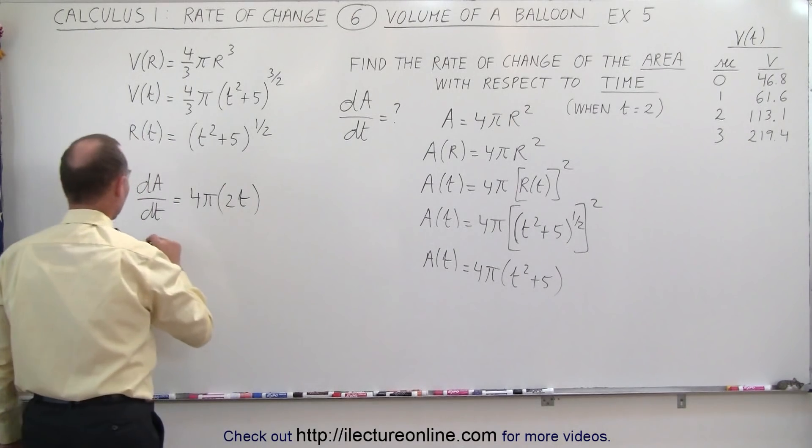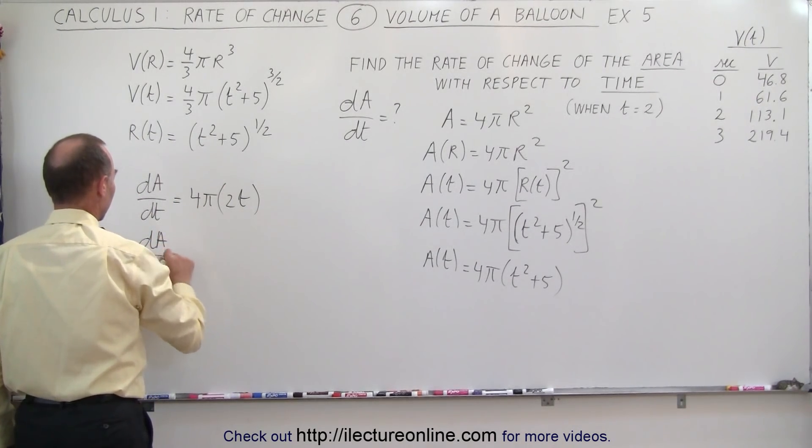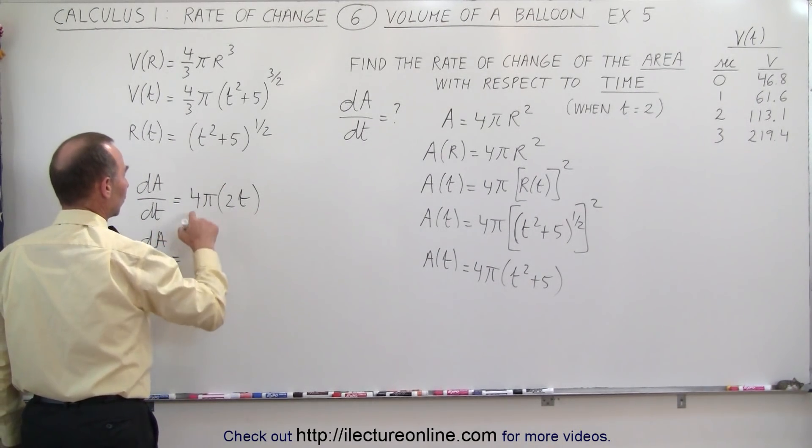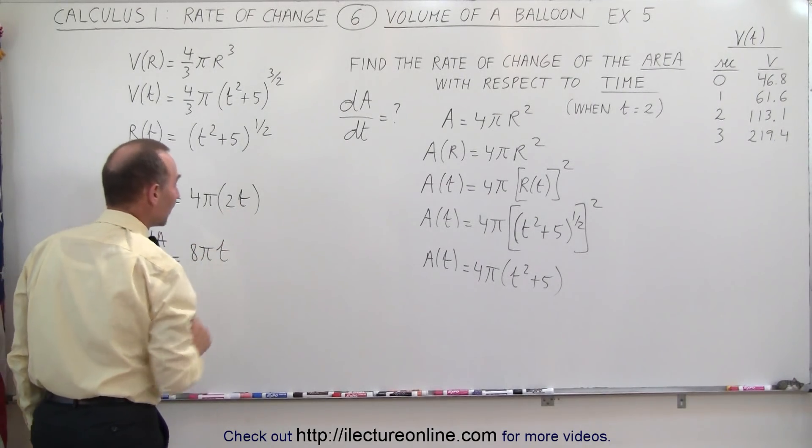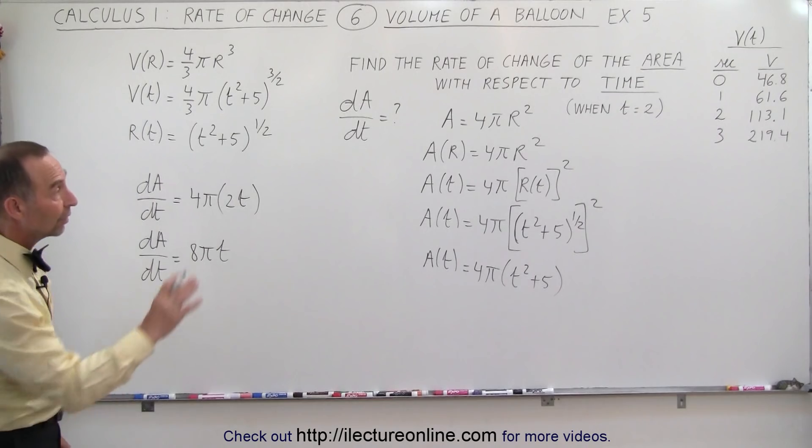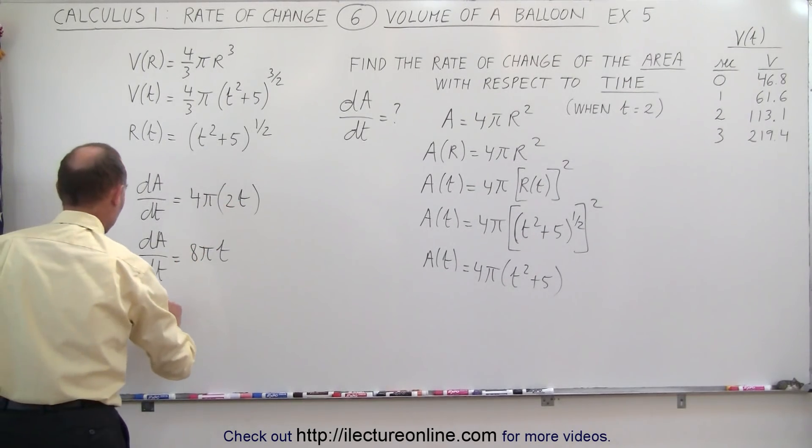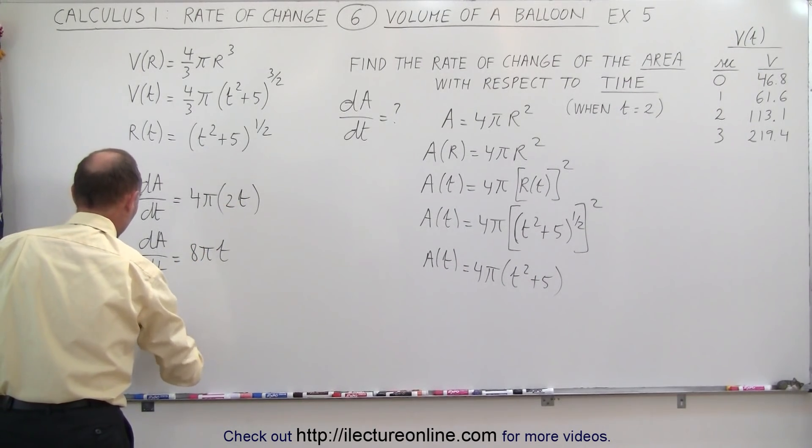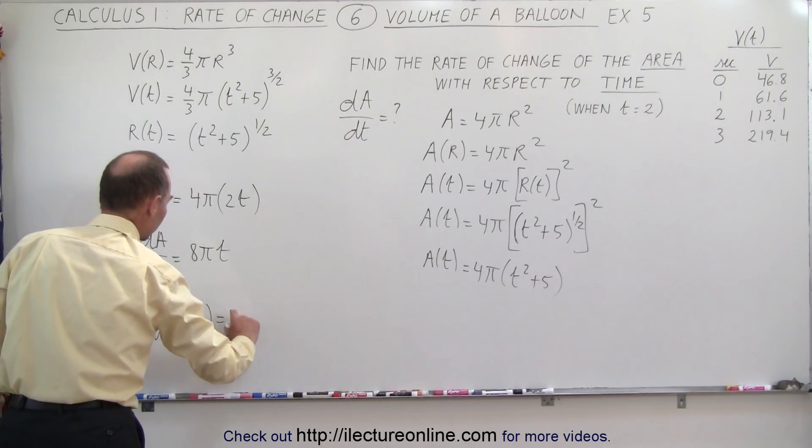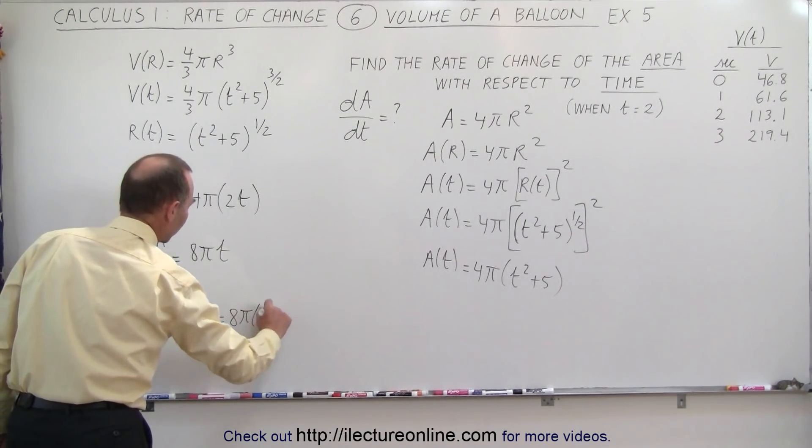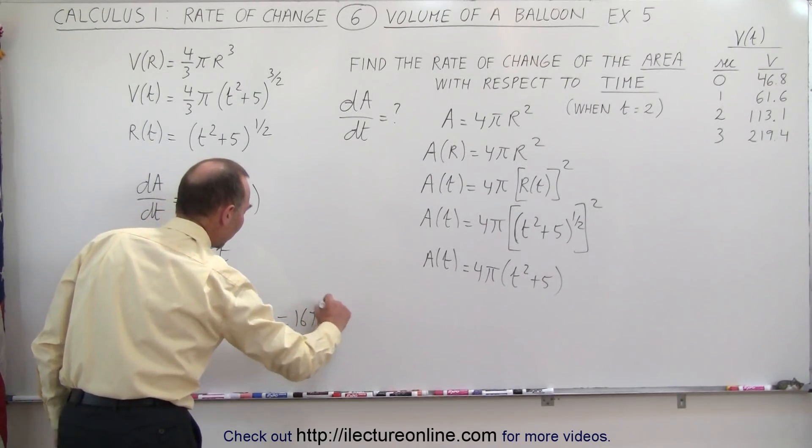And therefore, the dA/dt is equal to, well, that would be 8π times t. Now, we want to evaluate that when t is equal to 2 seconds. That means that the change of the area with respect to time, when time is equal to 2, that would be equal to 8π times 2, which is equal to 16π.